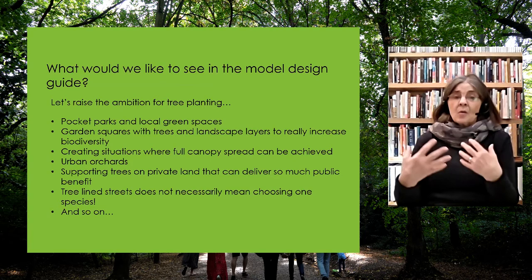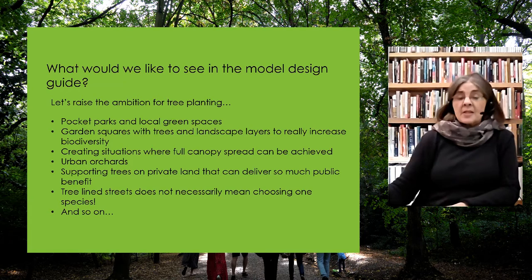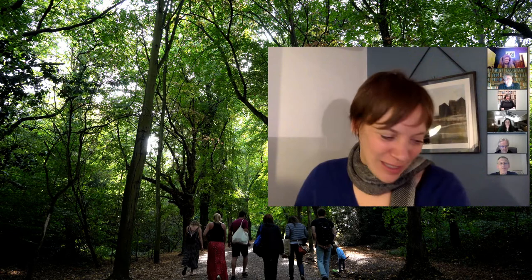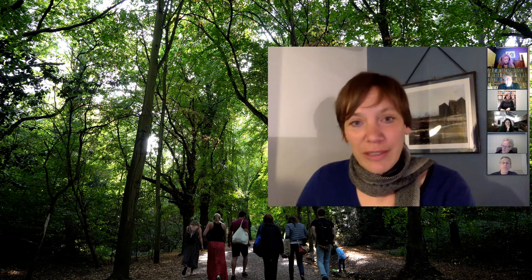What I'd like to see in the model design guide is the ambition raised for everything trees can do for us. There are so many things trees can do for place-making; we need to work out how to effectively design with trees and ensure they deliver their benefits. The very important point is that it's not just the code — it's all the other regulations, right down to mortgage applications, that need to follow suit so we can actually deliver the vision.